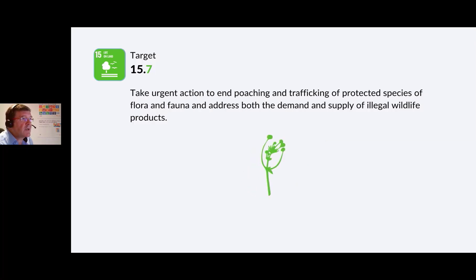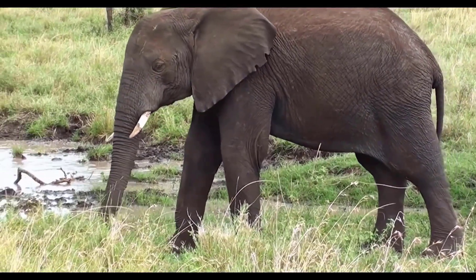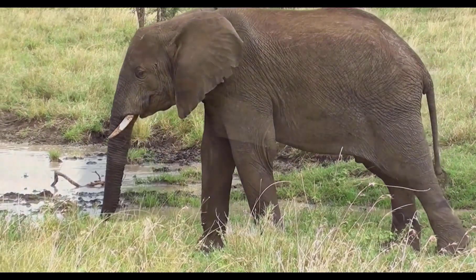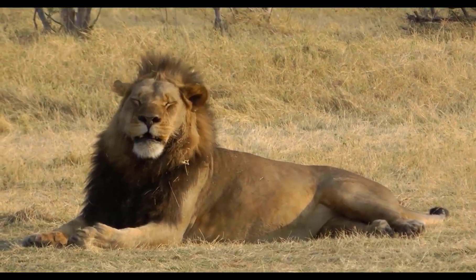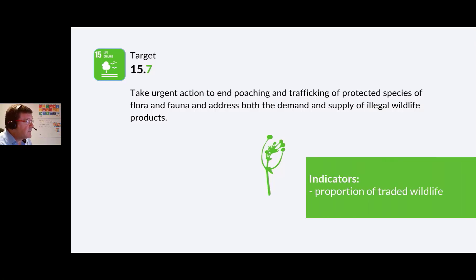Target 15.7: Take urgent action to end poaching and trafficking of protected species of flora and fauna, and address both the demand and supply of illegal wildlife products. World wildlife crime reports since 2016 show that trafficking of wild fauna has grown in importance in public consciousness and risen on the political agenda, but there is still a lot more work to do. The indicator is the proportion of traded wildlife that was poached or illicitly trafficked.